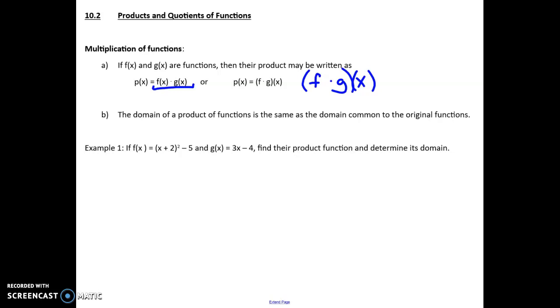So let's look at example one. If we have f of x equals x plus 2 squared minus 5 and g of x is 3x minus 4, find the product and determine the domain. Now let's find the domain first because the domain is actually the easiest part here. The first function here, f of x, what kind of function is that? A parabola.